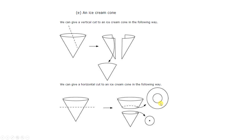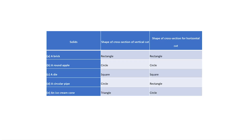So in an ice cream cone, vertical cut gives a triangle and horizontal cut gives a circle — one section looks like concentric circles and one is a single circle. This question is over. After solving all the sums, we have to make a table divided into three columns: one for solid, one for shape of cross section of vertical cut, and one for shape of cross section of horizontal cut. Starting with a brick — which is an example of a cuboid — vertical cut gives a rectangle and horizontal cut gives a rectangle.